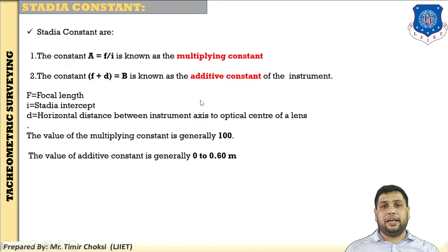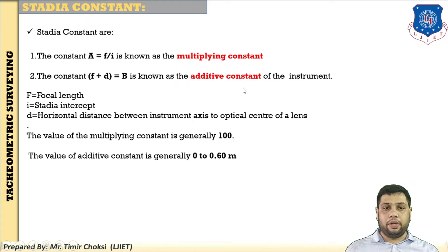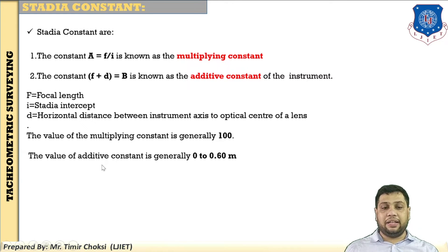Now the last theory in this session and chapter: stadia constants. There are two stadia constants. One is A equal to f/i — the multiplying constant — and the second is B equal to f plus d — the additive constant of the instrument. Here, F equals focal length, i equals stadia intercept, and d equals horizontal distance between the instrument axis and the optical center of the lens. Generally, the multiplying constant A is taken as 100, and the additive constant B is generally 0 to 0.6 cm.